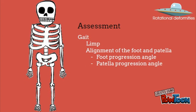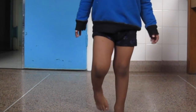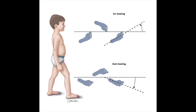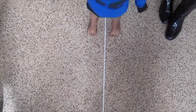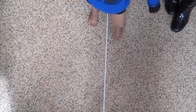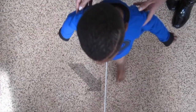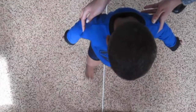Observe the patient's gait. Look for a limp and alignment of the foot and patella. When assessing the foot progression angle, ask the patient to walk towards you and look at their feet. A normal foot progression angle ranges from 6 to 10 degrees of external rotation and varies with age. An internal foot progression angle describes a foot that points towards the midline; an external foot progression angle describes a foot that points away from the midline. This boy has an internal foot progression angle as his feet point towards the midline.